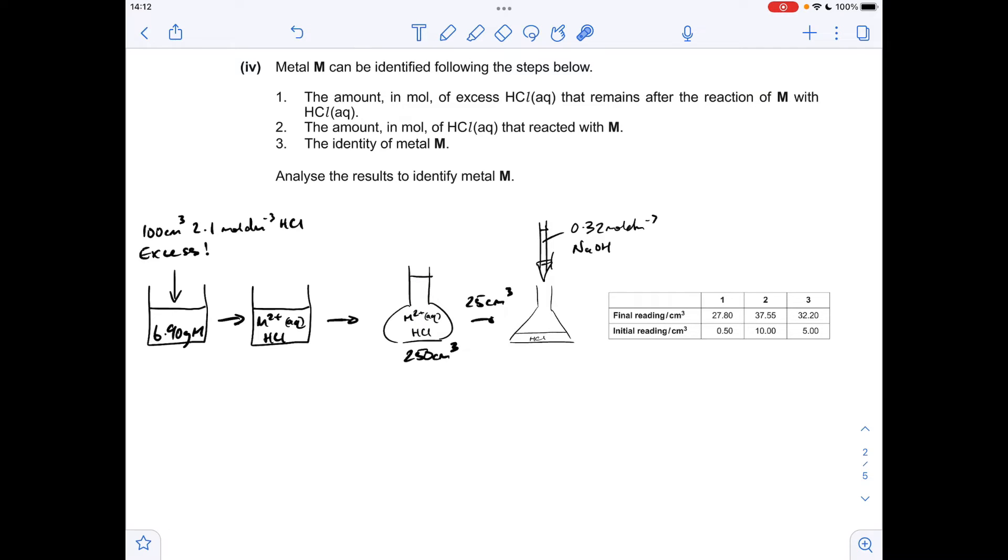That's then fed into a 250 cm cubed volumetric flask, which we made up to 250. So we've still got the same moles of M2+ and HCl in here than we had in here, and then 25 cm cubed of that is taken out and titrated with this concentration of sodium hydroxide. We're told that the reaction that takes place in the titration is between the sodium hydroxide and the HCl.